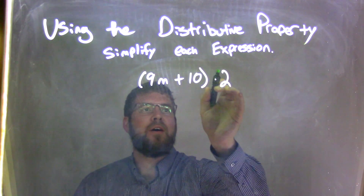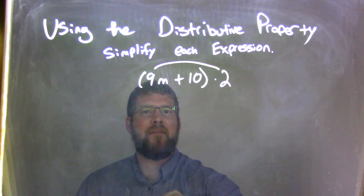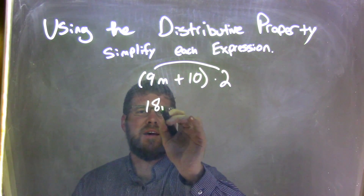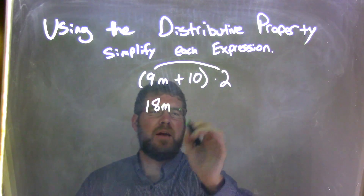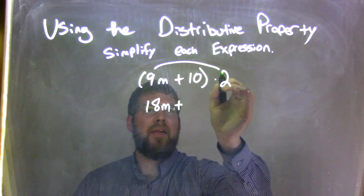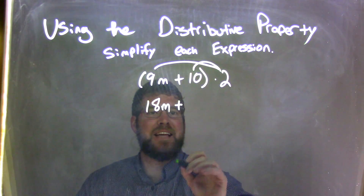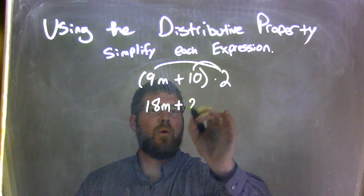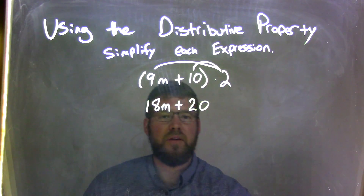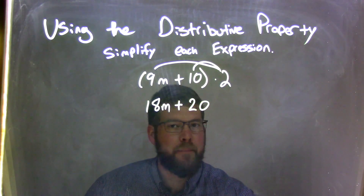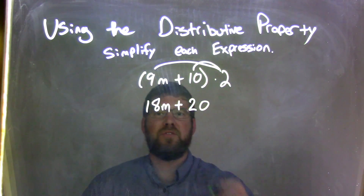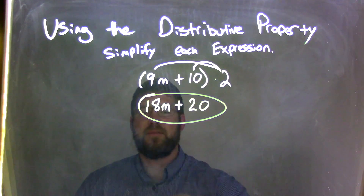What I like to do is multiply the 2 times the 9m first. That comes out to be 18m. Then we bring down that plus sign, and 2 times the 10 is 20. Now I look at — I have 18m plus 20. Can I combine those in any way? No, they're not like terms, and so this is our final answer.